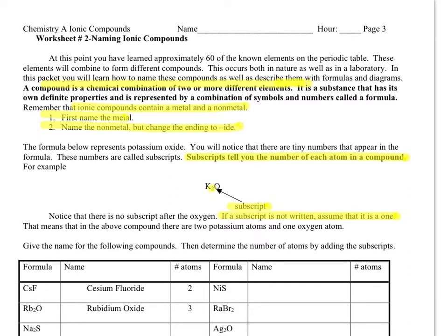This is worksheet two of the ionic compounds packet. Just a reminder from worksheet one, which you should have already completed: a compound is a combination of two or more different elements. We've already learned about all the